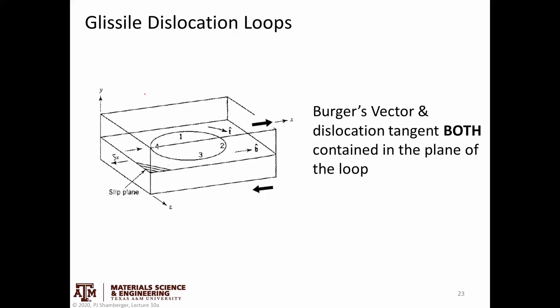Because dislocation lines tend to curl into loops, let's consider what happens when we have a circular dislocation on a shear plane. We define a direction and a Burgers vector. The Burgers vector is the same all the way around the loop.